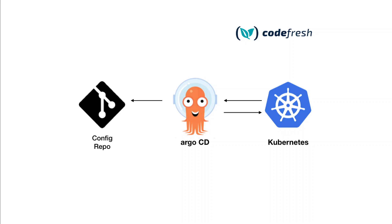GitOps is a big deal these days and it is gaining popularity by every minute. One of the leading GitOps tools is Argo CD. In this diagram, on the left hand side there is a Git repository and on the right hand side we have a Kubernetes cluster. This Kubernetes cluster could be on your on-prem or in your cloud. In the middle we have Argo CD.